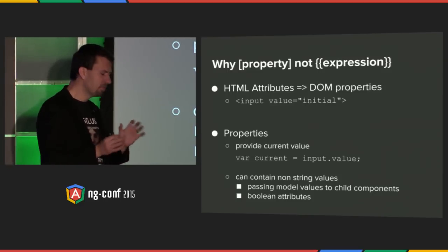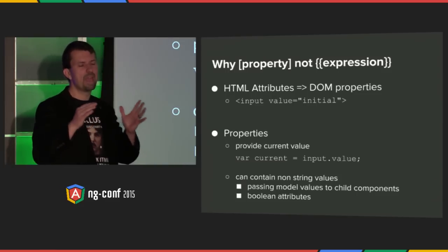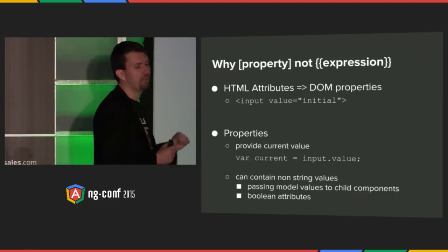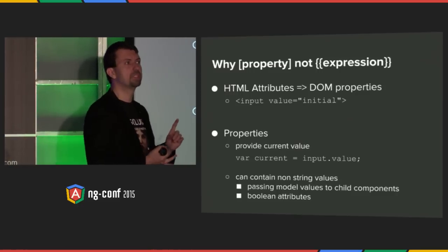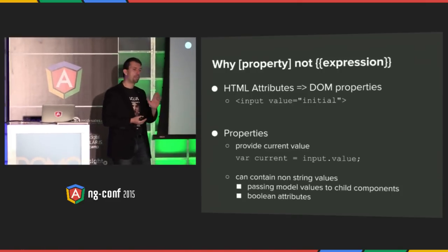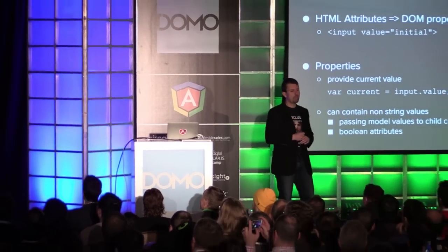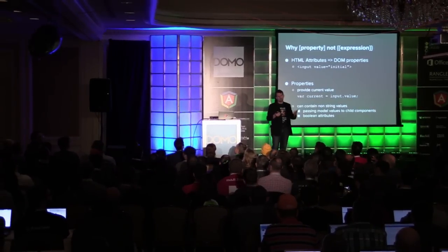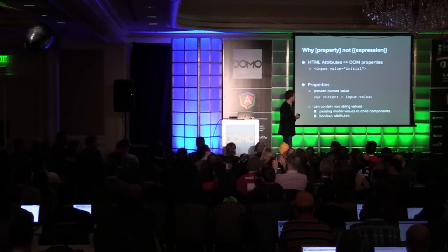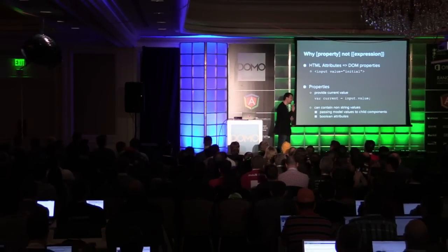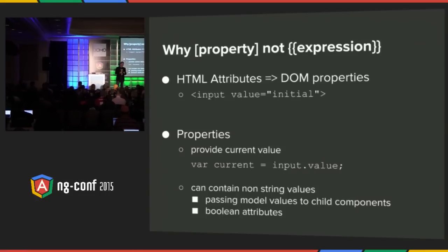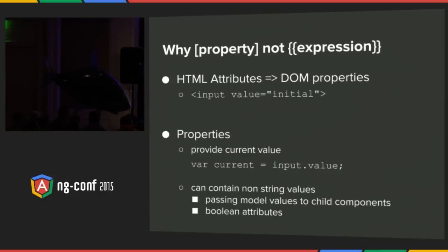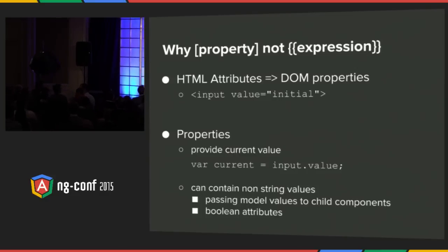For example, input.value — the initial value is placed inside the HTML value attribute, but if you want to read the current state of the value, you don't read the attribute. You read the property, because it's the property that has the good stuff. HTML is tricky and confusing because it syncs attributes and properties and keeps them constantly in sync — but not all of them. There are properties that only exist in the DOM API, like cursor position, selected index, and scrolling position. This is why originally Angular 1 thought there was no difference between attributes and properties, but it turns out properties are really the way to go.